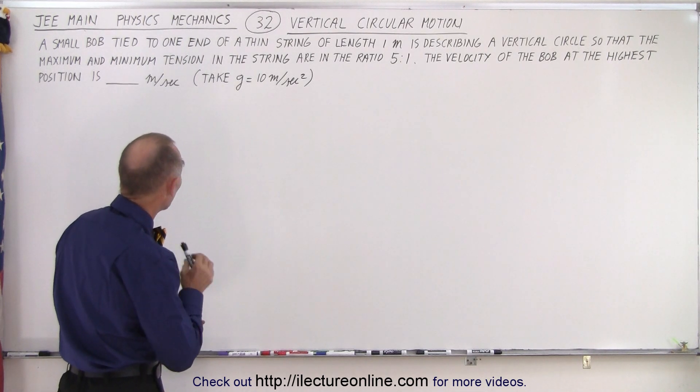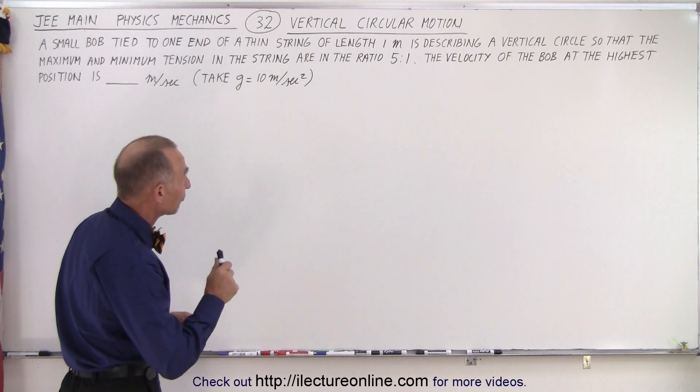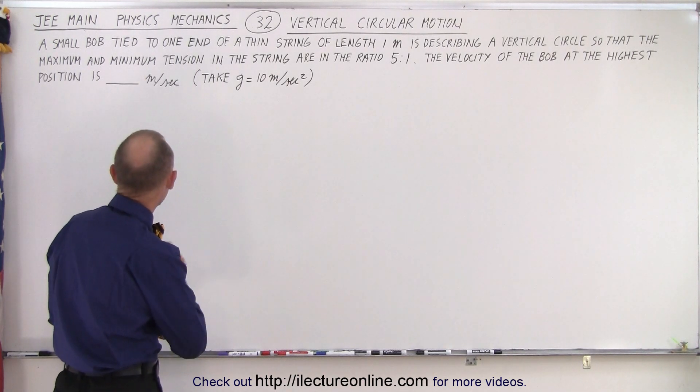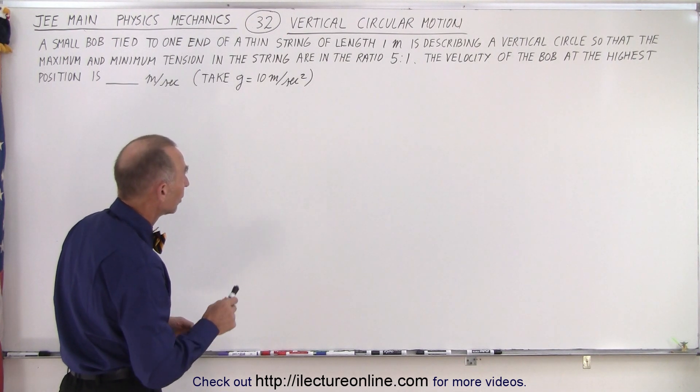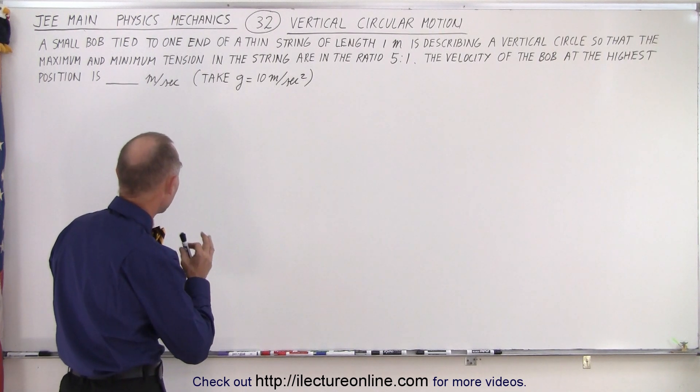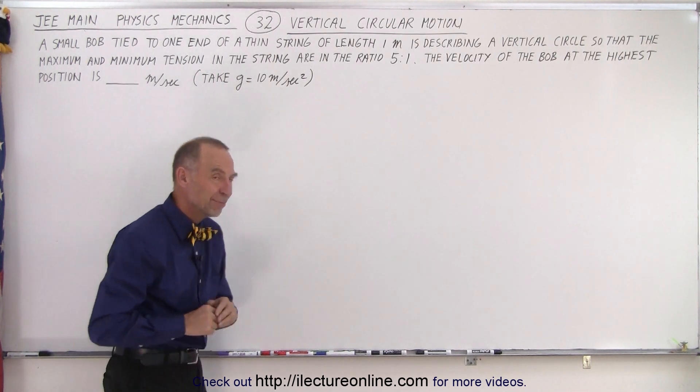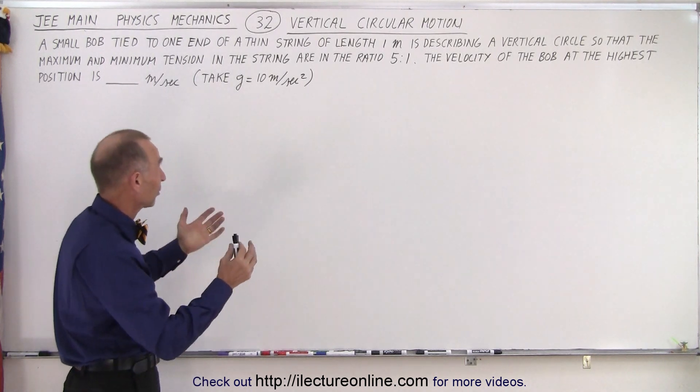A small bob tied to one end of a thin string of length 1 meter is describing a vertical circle so that the maximum and minimum tension in the string are in the ratio of 5 to 1. The velocity of the bob at the highest position is what we need to find, and we have to take g as 10 meters per second squared, which is nice because 9.8 is harder to deal with, especially without a calculator.